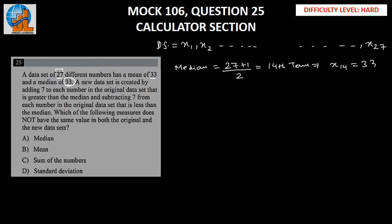This implies x14 is 33. So we have x13, then 33 (which is x14), and then x15. Now we are creating a new data set in which we are adding 7 to each number in the original data set that is greater than the median.